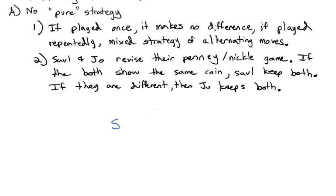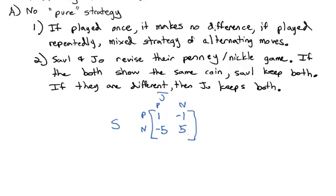We'll put Saul as the row player and Joe as the column player. They can each choose a penny or a nickel. If they both show penny, Saul wins one cent from Joe. If Saul shows a penny and Joe shows a nickel, Saul loses one cent. If Saul shows a nickel and Joe shows a penny, Saul loses his nickel — he's down five cents. But if they both show nickel, Saul is up five cents.